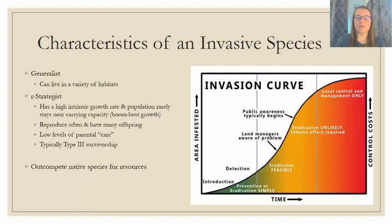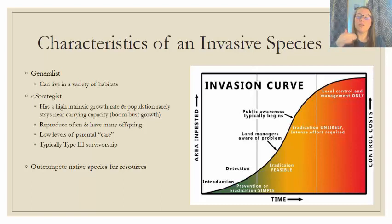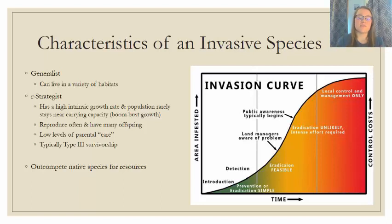This diagram illustrates how we perceive and respond to invasive species over time. Oftentimes by the time people become aware of the problem, it's already an uphill battle to control it. Once the invasive is detected, it takes time before land managers respond — at that point eradication is still possible. But by the time the public is engaged, it becomes very unlikely to completely eradicate the species, and the focus shifts to controlling the population and local management. These species spread so rapidly that a focused early effort is critical.